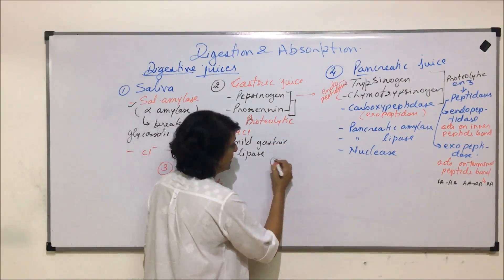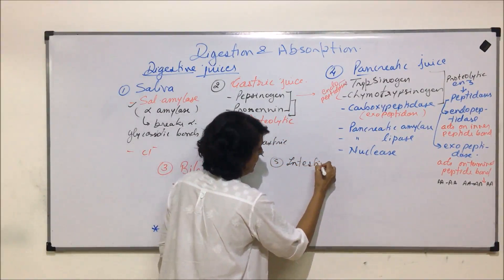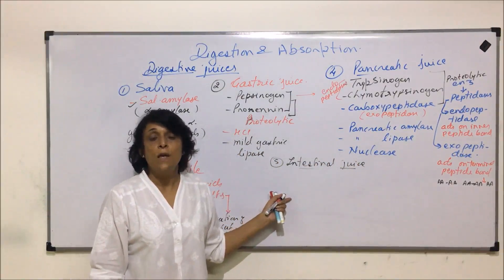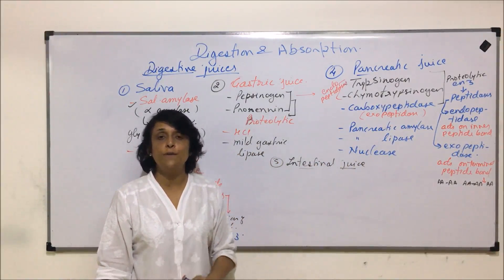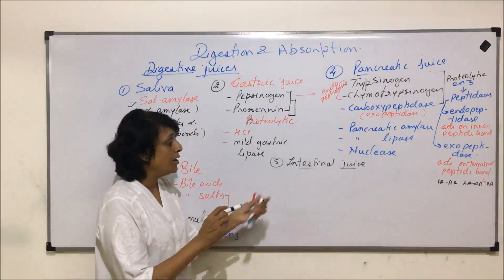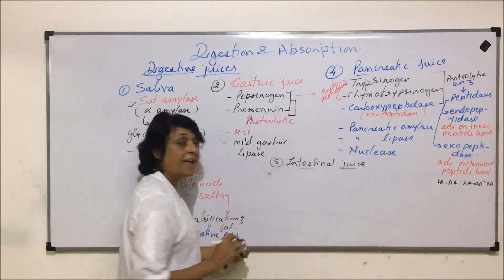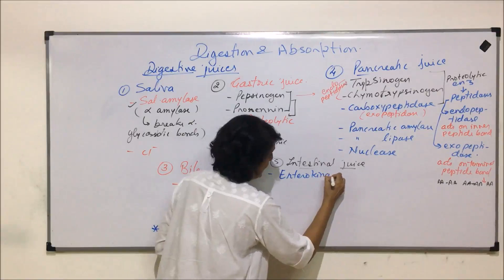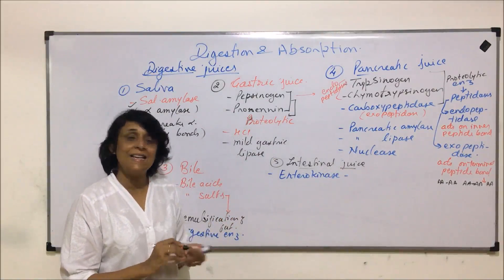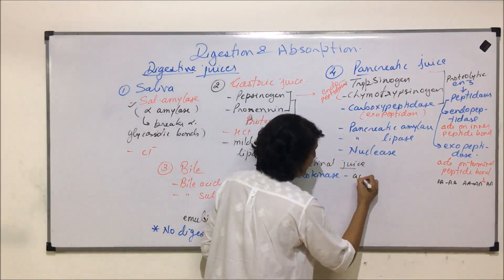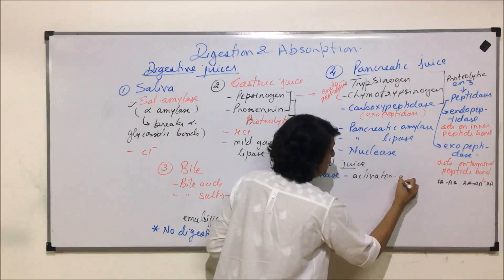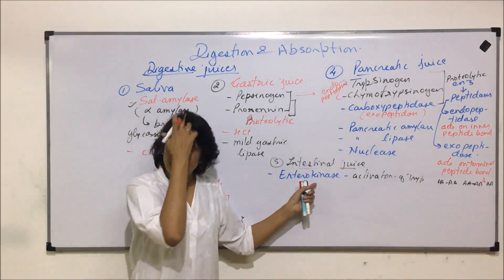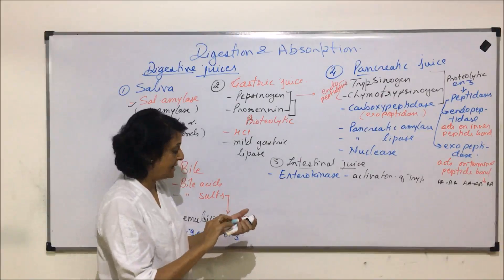The last digestive juice is intestinal juice, also called succus entericus, which is the combined secretion of the crypts of Lieberkühn and Brunner's glands. It contains a substance called enterokinase, also known as enteropeptidase, which does not itself act as a digestive enzyme but acts as an activator of trypsin.